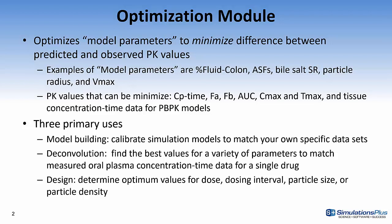The optimization module within GastroPlus optimizes model parameters to minimize the difference between the predicted and the observed PK values. A few examples of model parameters that can be optimized are the percent fluid in the colon, absorption scale factors, bile salt solubility ratio, particle radius, and Vmax.